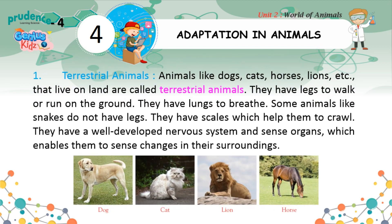Terrestrial Animals. Animals like dogs, cats, horses, lions, etc. that live on land are called terrestrial animals. They have legs to walk or run on the ground, and they have lungs to breathe. Some animals like snakes do not have legs — they have scales which help them to crawl. They have a well-developed nervous system and sense organs which enable them to sense changes in their surroundings.